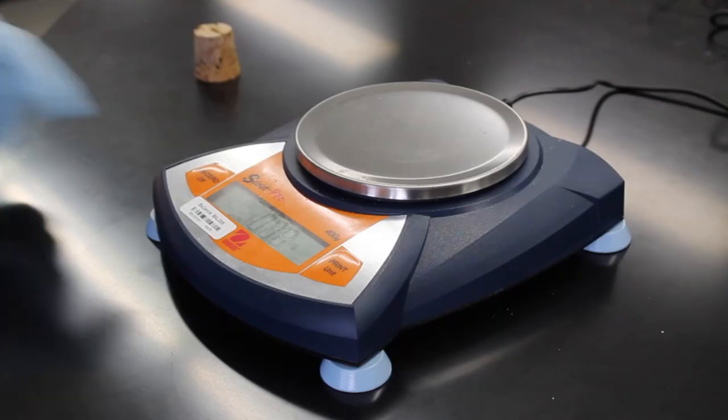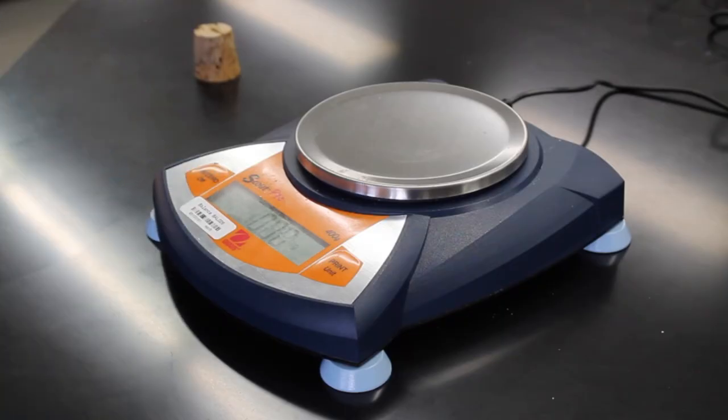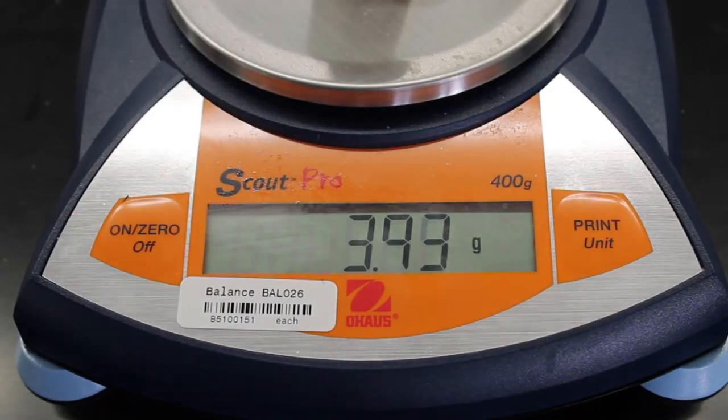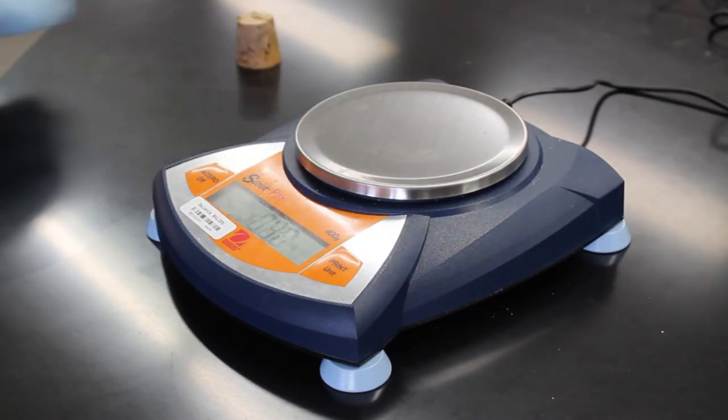Our previous example used a balance that was accurate to the nearest one thousandth. But you may come across balances in the lab that are not as precise. Here is an example of a balance that measures to the nearest one hundredth of a gram. Make sure to read your experiment before lab so you know how precise you need to be in your measurements. This will help you determine what balance you need to use.